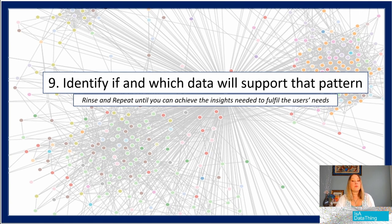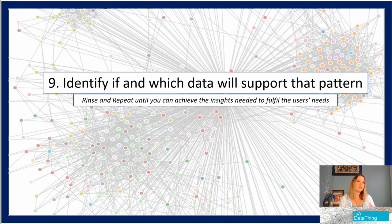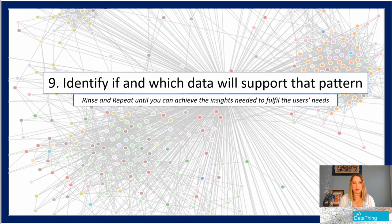Identify if and which data will support that pattern — now we're really getting into the information architecture phase. Up until this point, you could have a user group or somebody else at your company doing this for you. Whatever the case, you still need to understand those pieces and processes because the user experience team you work with might not be thinking about the areas where they could be introducing stereotypes. Here you have to think through what that pattern is — you've got the user persona, you have all this data, and now you're looking at the pattern to make sure you have the data to support it.